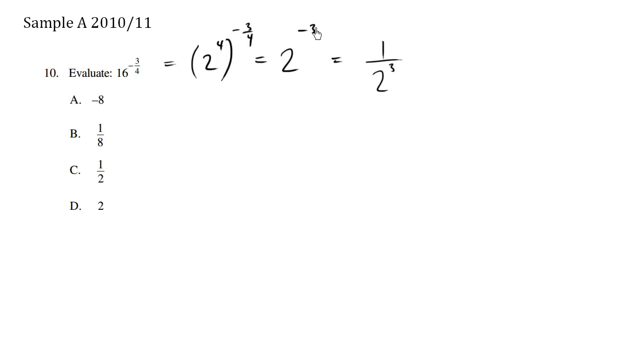So we finally have 1/(2^3). 2 times 2 times 2 is 8, giving us 1 over 8, and the answer is B.